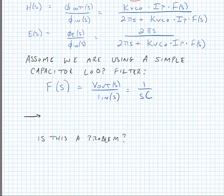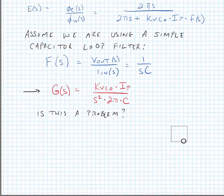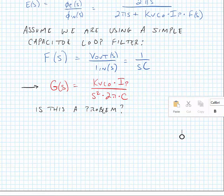Let's go ahead and substitute this loop filter into our open loop transfer function. So we have now that G of S is equal to KVCO times IP divided by S squared times 2 pi times C. Now, as we think about this, is this a problem for us?